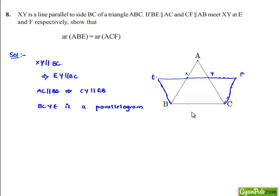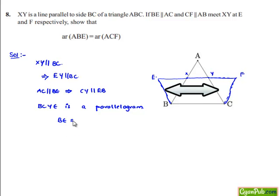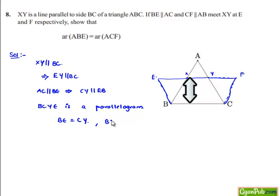Therefore, quadrilateral BCYE is a parallelogram. In a parallelogram, opposite sides are of equal length. So we can say BE is equal to CY and also BC is equal to EY.